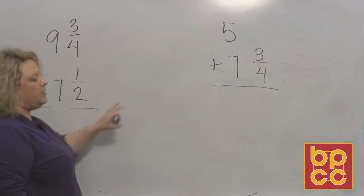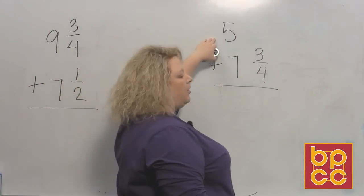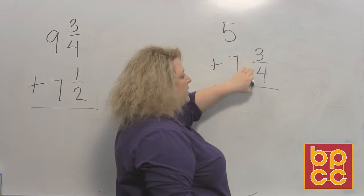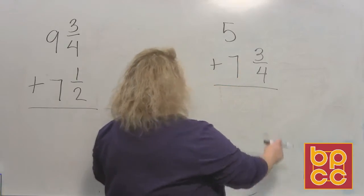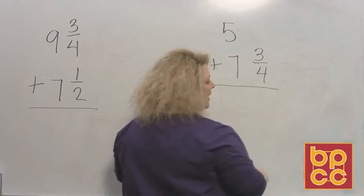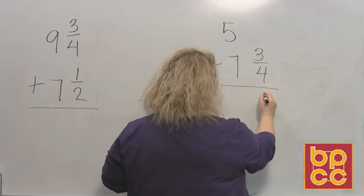I have two problems up here. Let's start with the easier one first. We're going to take the whole number 5 and add it to 7 and three-fourths. When I look at this, I notice that the 5 doesn't have any fraction at all.